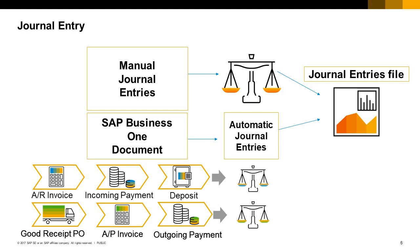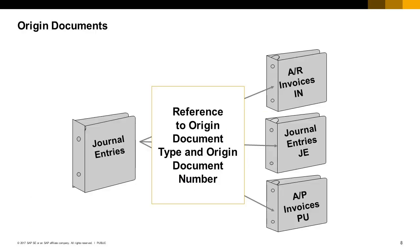You can set various defaults for journal entries, and you can also change some document settings for an individual journal entry. All journal entries refer to the type and number of the origin documents, since frequently journal entries are created automatically from another document. For example, IN is used for customer invoices. The origin documents of manual journal entries are the journal entries themselves. For this reason, they refer to themselves and are of type JE, which is standard for journal entry.